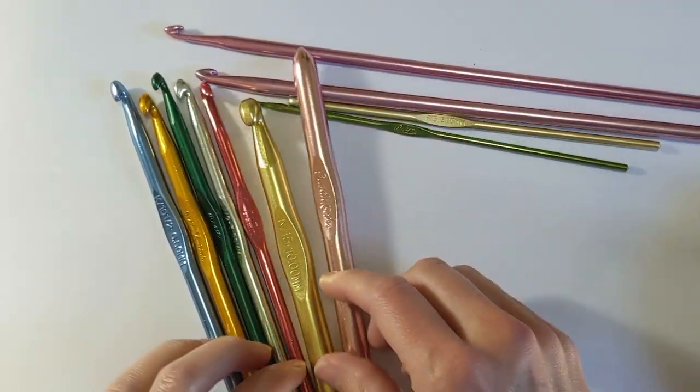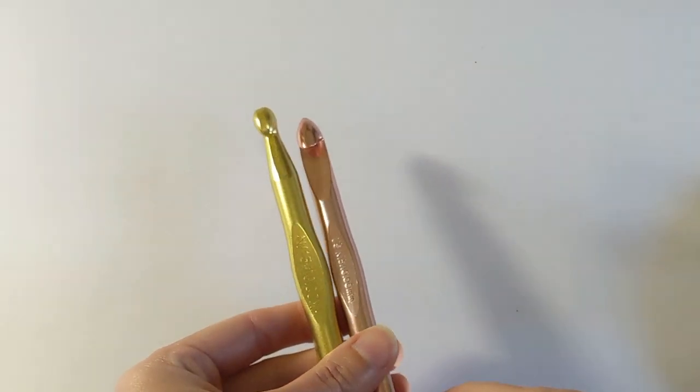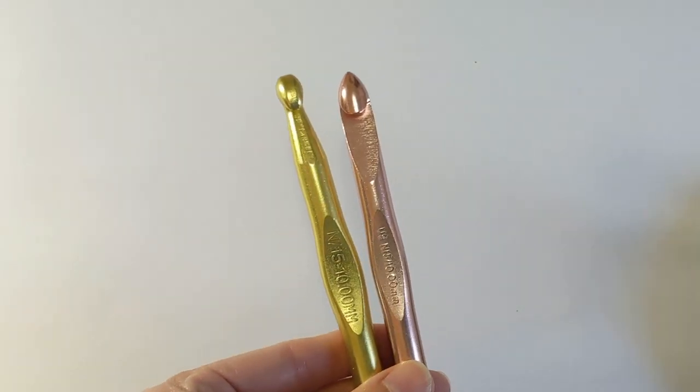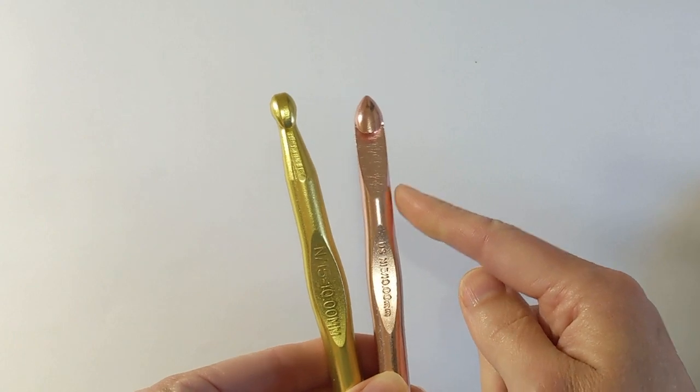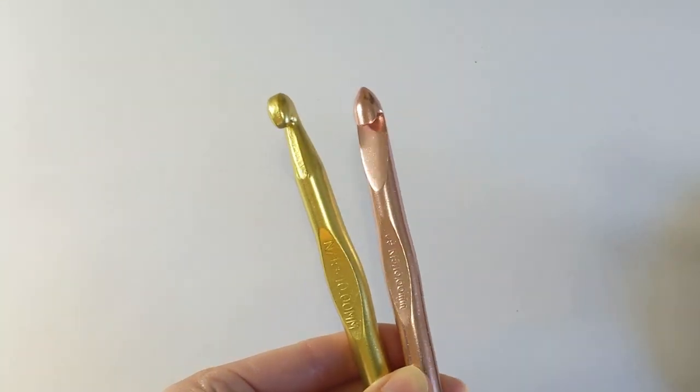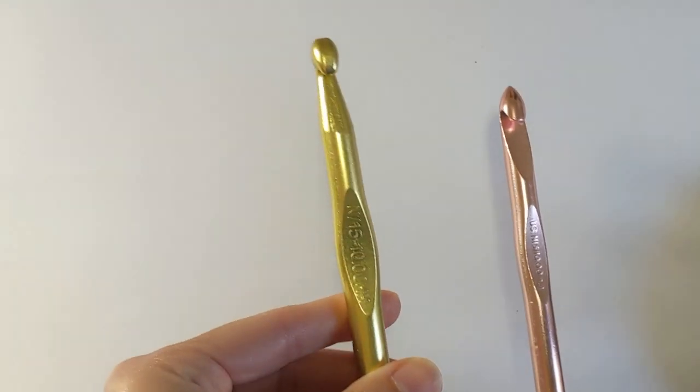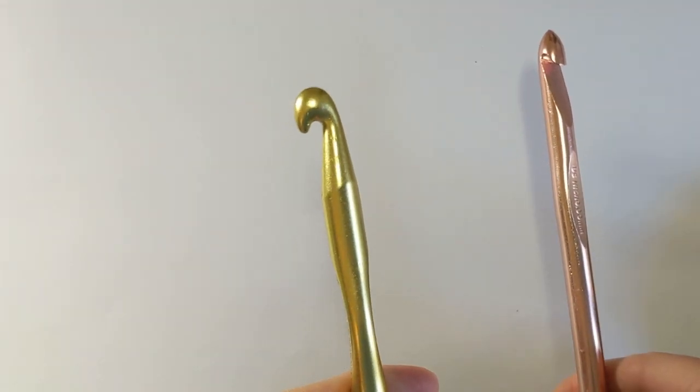Just to clarify, today I will be looking at tapered aluminum crochet hooks. Here is an example of an inline hook and here is an example of a tapered hook. They are different shapes and different sizes. Both of these are modern, but I'm only going to be focusing on tapered crochet hooks today.